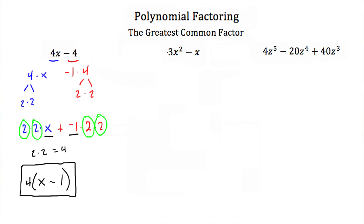Let's look at the next example: 3x squared minus x. We're going to follow the same steps — break down each term and figure out what's common, then factor that out. The 3x squared can be factored into 3 times x times x, and the negative x can be factored into negative 1 times x. The only thing common between both is one x.